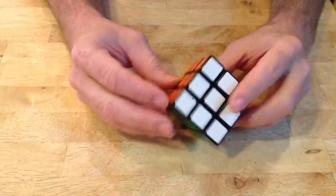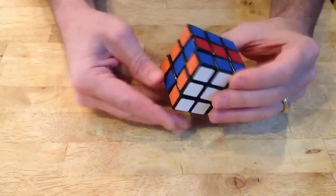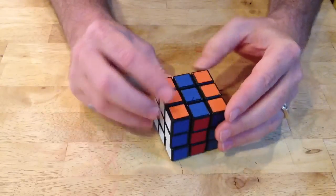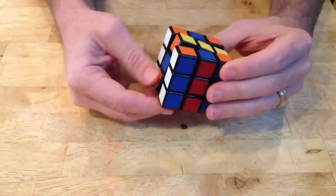Start by picking any random surface, it doesn't really matter, and just go center one right. Once you've done that, you need to go to the side that you just went to and do center one right again.